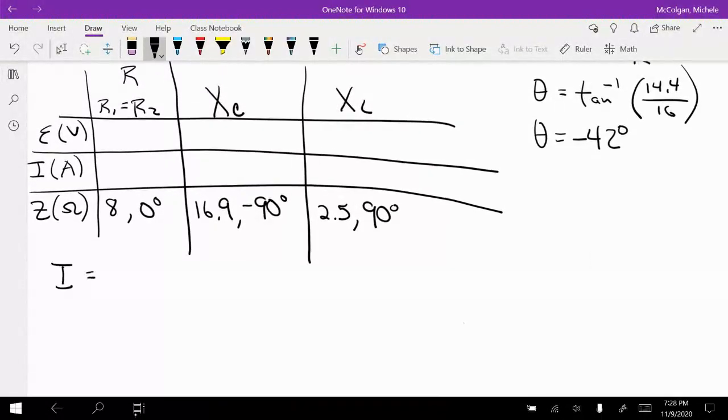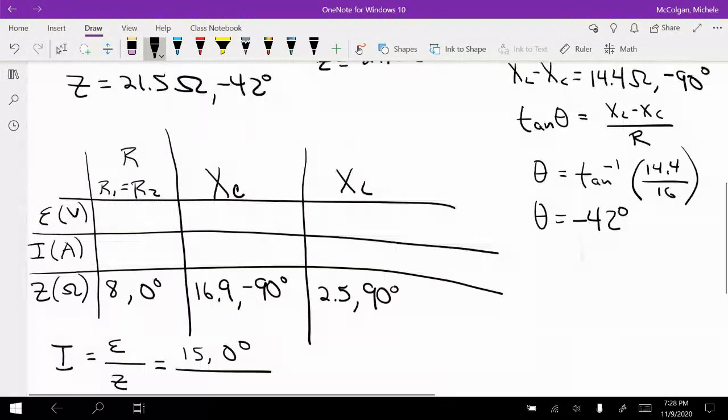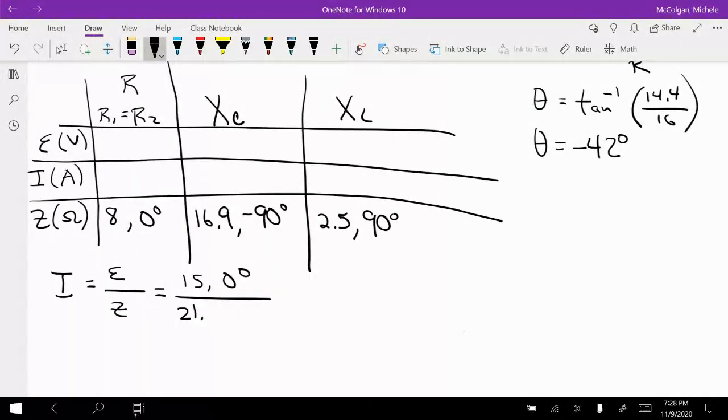So my I is equal to my voltage over Z. So this is going to be 15 volts zero degrees over Z is 21.5 and negative 42 degrees. So my I is going to equal 0.7 amps and 42 degrees. So that's going to be my current for all of these, 0.7 because it's a series circuit.